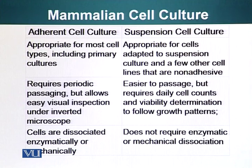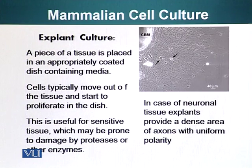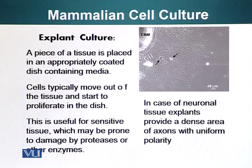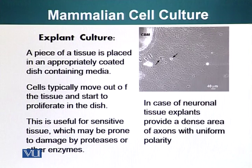Adherent cells have to be dissociated enzymatically or mechanically. Suspension cells, however, don't stick to each other or to extracellular matrix molecules, so you don't have to dissociate them enzymatically or mechanically because they are already single cells. Explant cultures: a piece of tissue is placed in an appropriately coated dish containing media. Cells typically move out of the tissue and start to proliferate in the dish. This is useful for sensitive tissue that may be prone to damage by proteases or enzymes needed to dissociate the tissue.